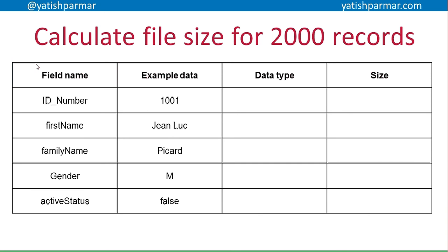Now I want you to have a go yourself — hit pause. I'm going to look at this example file size record format on screen. Have a go at calculating the file size. For first name and family name, just assume they have a maximum of 20 characters. Hit pause, and when you're ready, hit play again to check your calculation against mine.